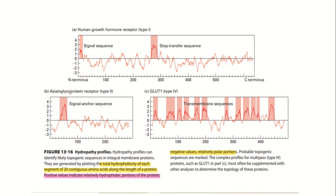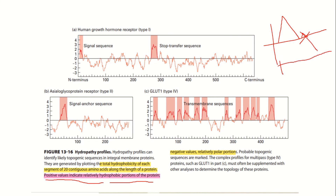One peak indicates a single transmembrane protein, and multiple peaks indicate a multiple transmembrane protein. Positive values on the hydropathy plot indicate the hydrophobic portion of the protein, while negative values indicate the polar, hydrophilic portion. A transmembrane segment must be generated by at least 20 continuous amino acids along the protein length to be counted.